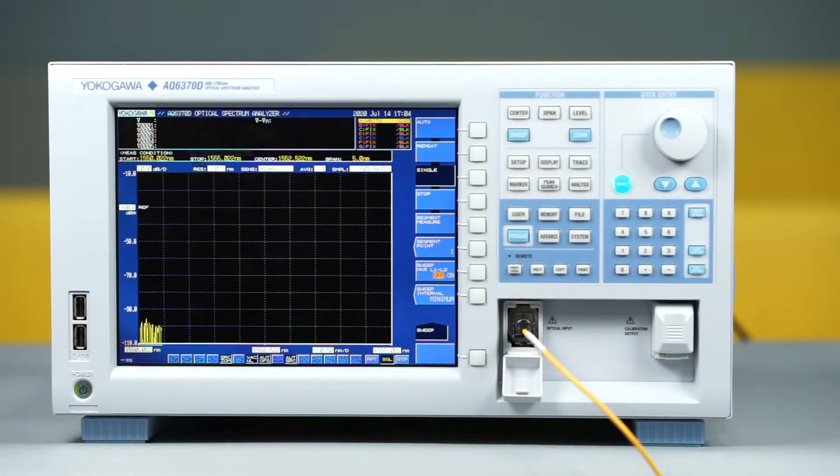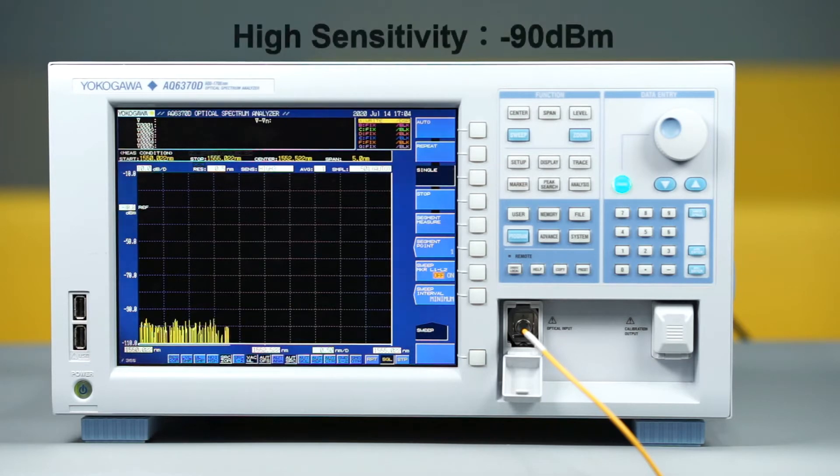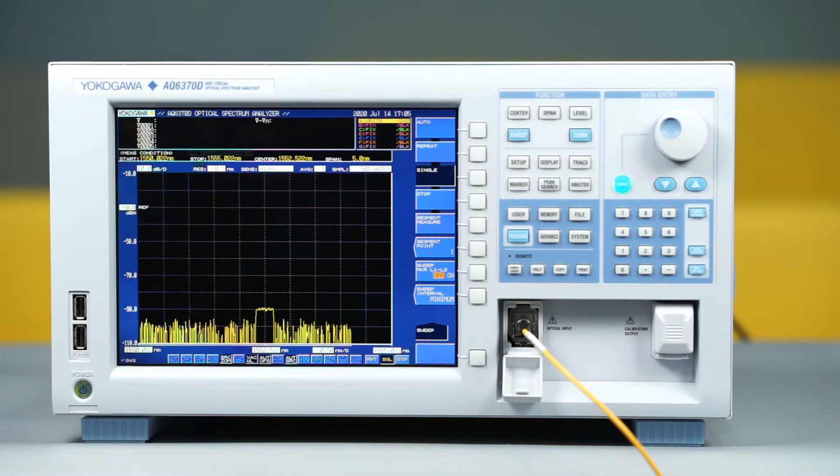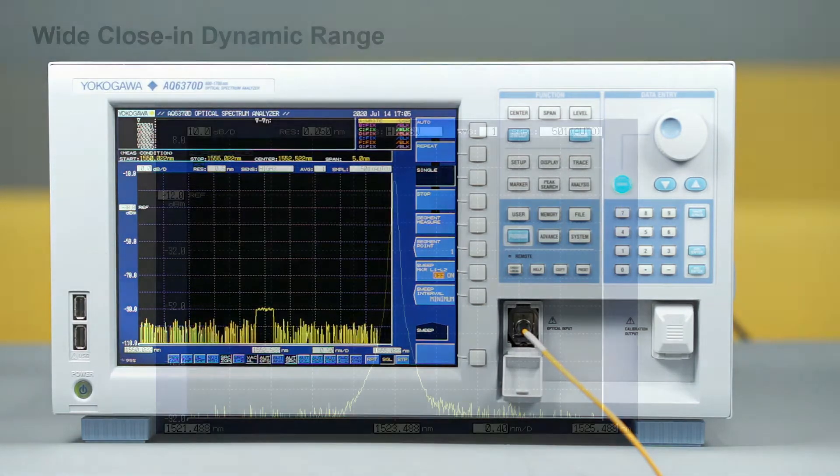The AQ6370D can accurately measure optical signals as weak as minus 90 dBm. The very high sensitivity of this model enables the user to measure low-power signals quickly and reliably, without any need for averaging across multiple measurement samples.